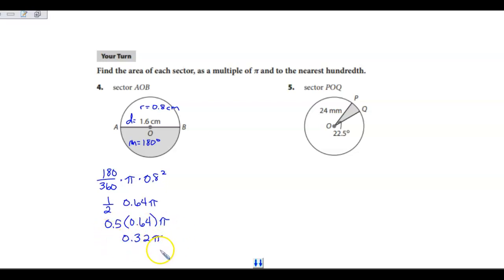Now simplify it further and don't forget to round to the nearest hundredth. When I take 32 hundredths times pi, I get 1.0053, round to the nearest hundredth, I get 1.01 centimeters squared. So in terms of pi, and in simplified form.